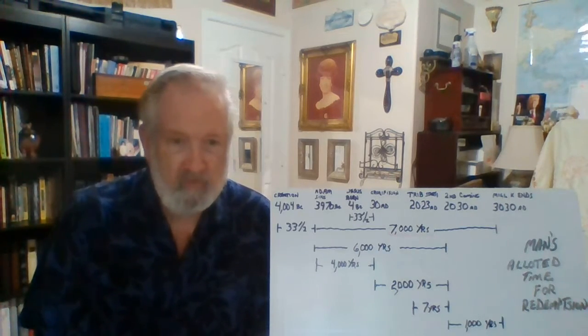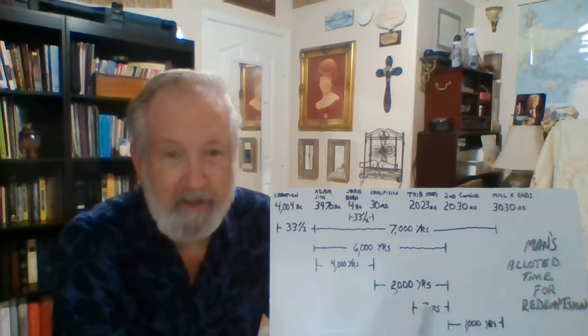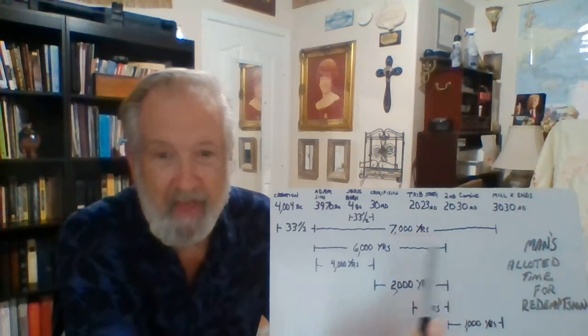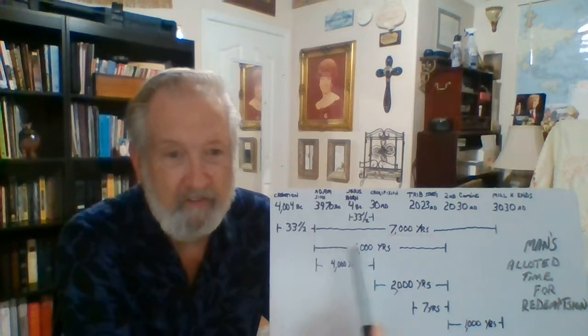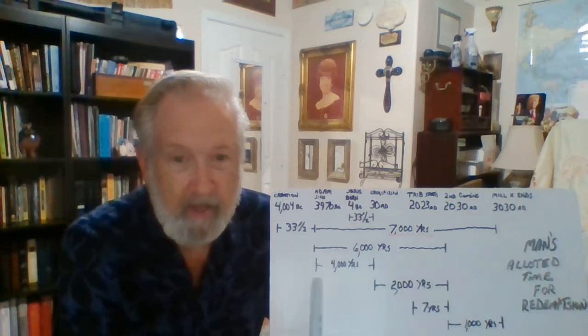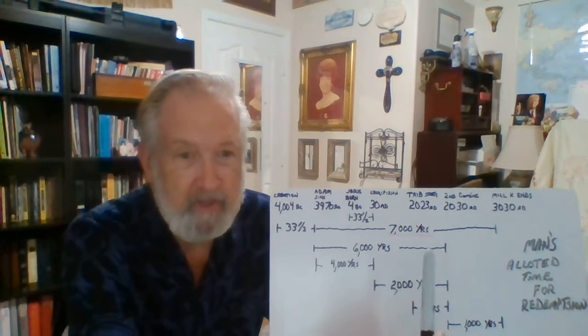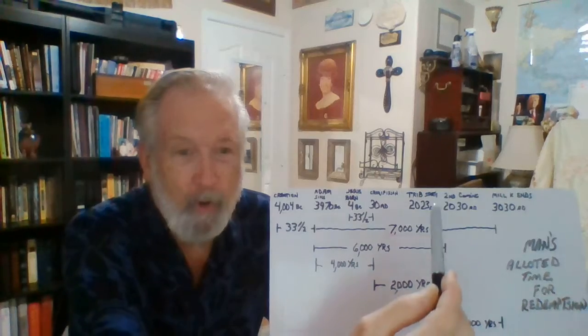Well, as you can look on this particular chart, we have this time period up here of 7,000 years from 3970 to the end of the millennial kingdom. If we take 6,000 years of that, we have the same time up until this time right here.